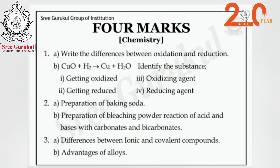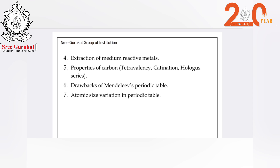From the metals and non-metals lesson, expect 4-mark questions on differences between ionic and covalent compounds, advantages of alloys, and extraction of medium reactive metals. In carbon and its compounds, expect questions on properties of carbon like tetravalency, catenation, and homologous series. From periodic classification of elements, expect questions on Mendeleev's drawbacks and atomic size variation — atomic size variation in the periodic table is a very compulsory question, common across all question papers.